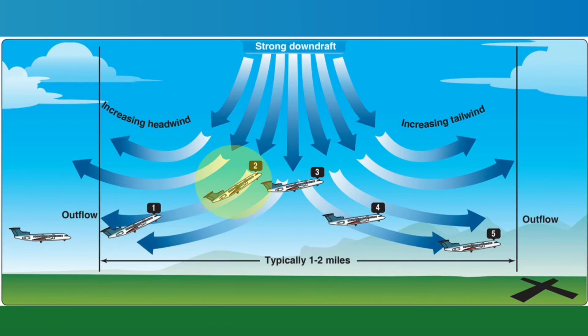Aircraft number two would experience headwind and downdrafts, so headwind with downdrafts. It would experience an increase in indicated airspeed, but the downdrafts would remove any performance gains.